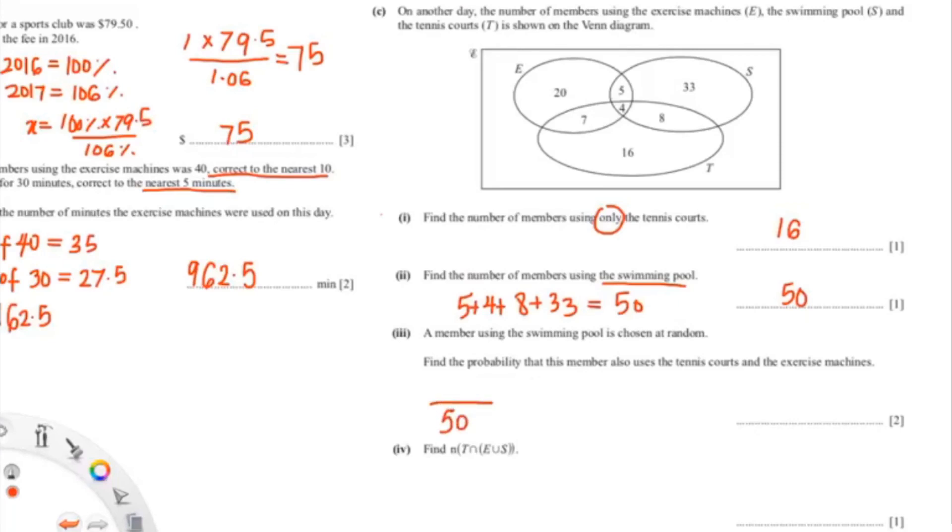We know that the total for the swimming members is 50, so it'll be something over 50. Right over here you can see that there are 4 members who use all three. So it'll be 4 over 50, which you can simplify to 2 over 25.